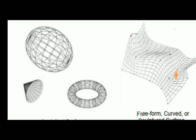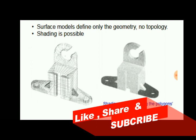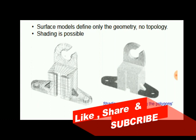Shading is also possible in this type of surface model. Surface models define only the geometry, not topology. Shading is possible by interpreting the polygons' direction and spatial order.